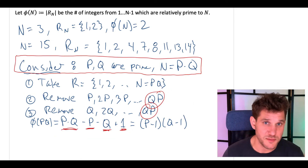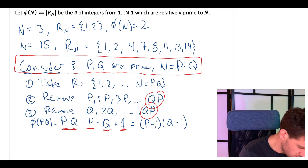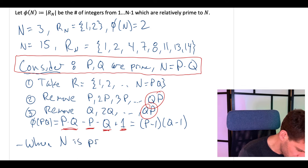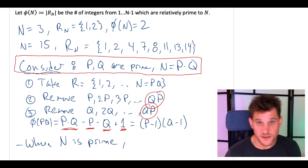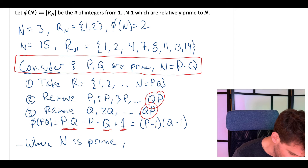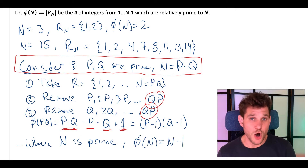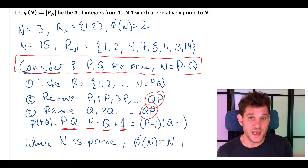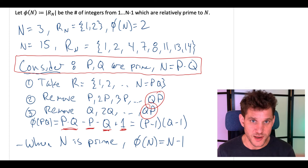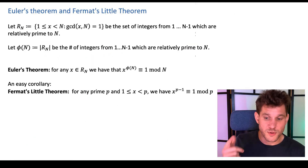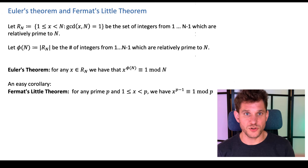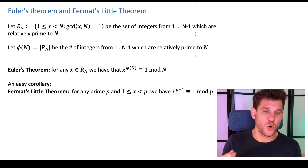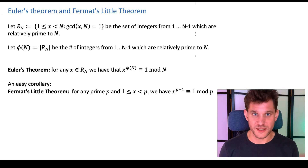Oh, and one easy case I forgot to mention: when n is prime, phi of n is pretty easy to compute. Phi of n just equals n minus 1, because all of the numbers from 1 to n minus 1 are relatively prime to n when n is a prime number. This brings us to the key result I want to get to: Euler's theorem, and a simple corollary called Fermat's Little theorem.